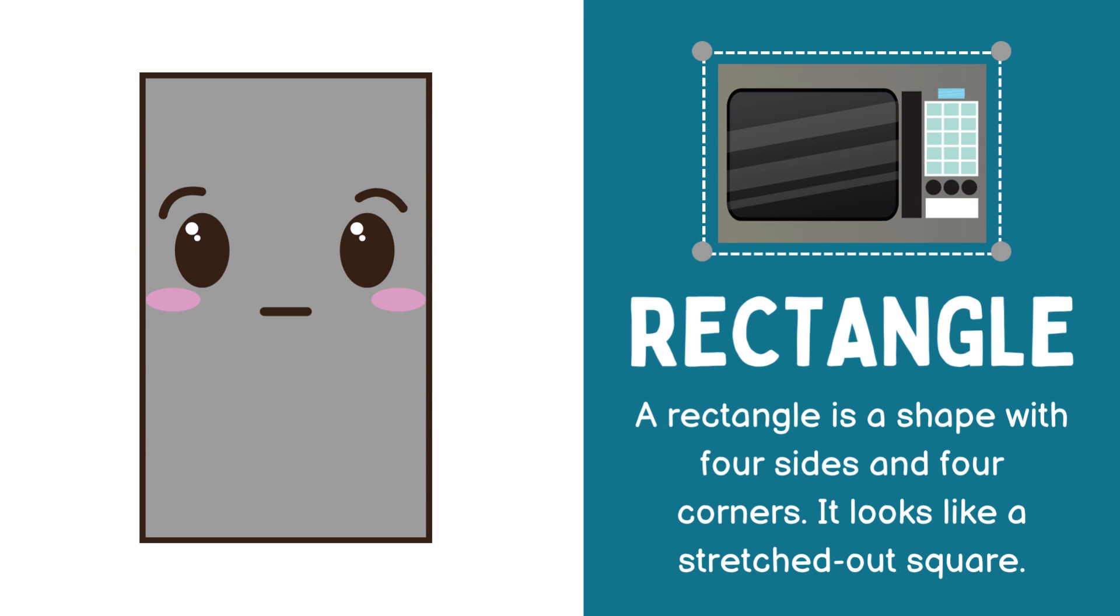Rectangle. A rectangle is a shape with four sides and four corners. It looks like a stretched out square.